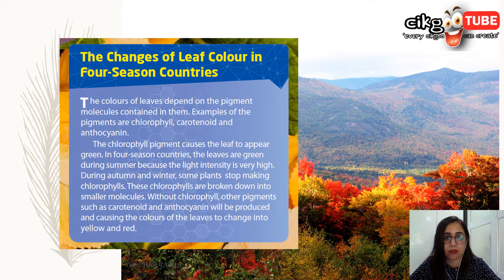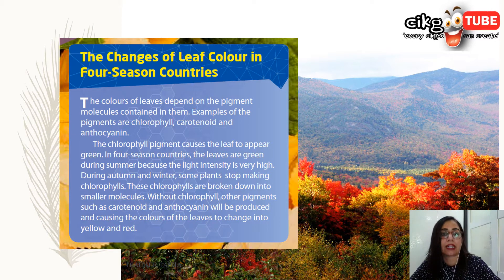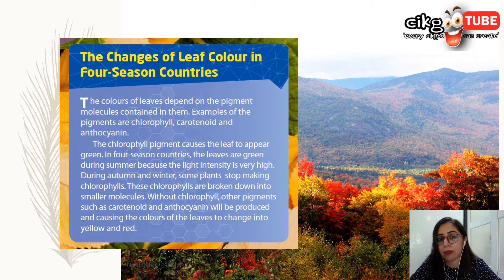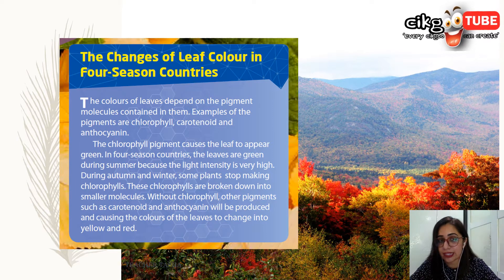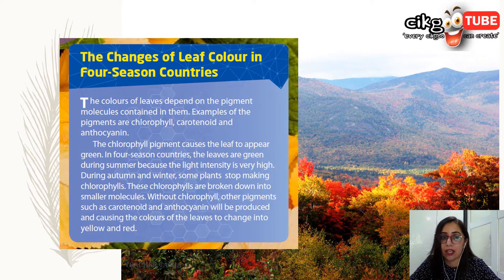Before we begin, let's look at the changes of leaf color in fall season countries. Leaves come in many colors — the most common being green. The colors of leaves actually depend on the pigment molecules contained in them. Examples of pigments are chlorophyll, carotenoid, and anthocyanin. The most common one we know is chlorophyll, because it makes the plant green.